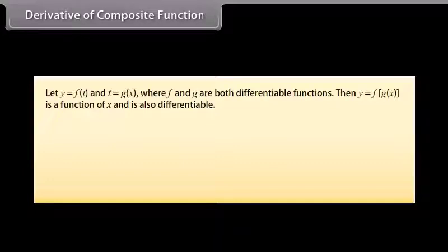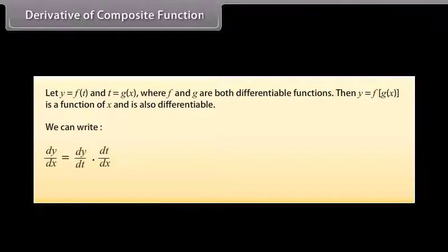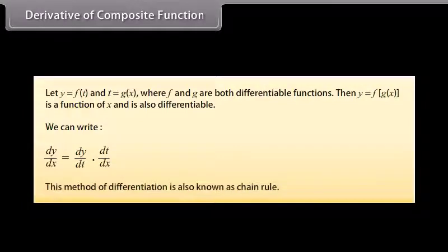Derivative of composite functions: Let y = f(t) and t = g(x), where f and g are both differentiable functions. Then y = f(g(x)) is a function of x and is also differentiable. We can write d/dx of y = (d/dt of y) · (d/dx of t). This method of differentiation is also known as the chain rule.